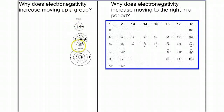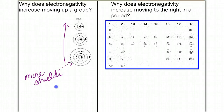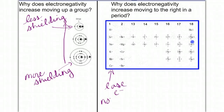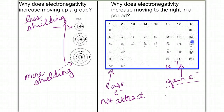Why does electronegativity increase moving up a group? As we move up, there is less shielding. Lower in the group, there is more shielding, which decreases the ability of the nucleus to attract electrons to itself. Moving up the group, less shielding allows a stronger nuclear pull to attract electrons to the atom. Horizontally, why does electronegativity increase moving to the right? It has to do with valence — elements on the left are trying to lose electrons, so they have low electronegativity, whereas groups six and seven are trying to gain electrons, giving them a strong attraction.